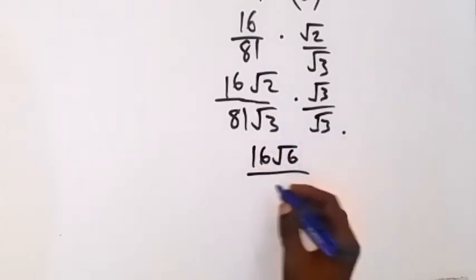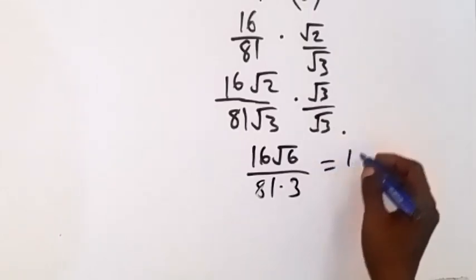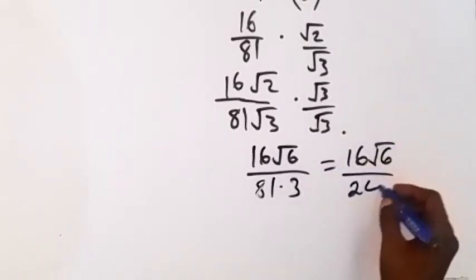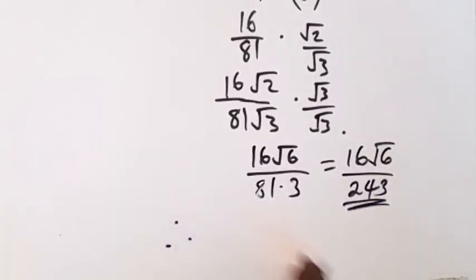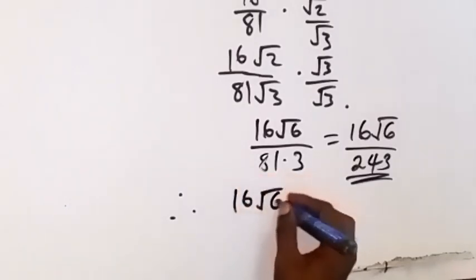And this one will give us 16 root 6 divided by 243. And that is our solution. So therefore, we have the answer will give us 16 root 6 divided by 243.